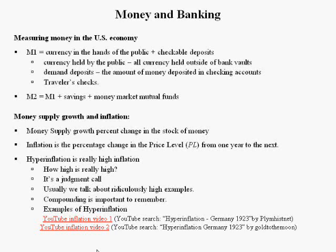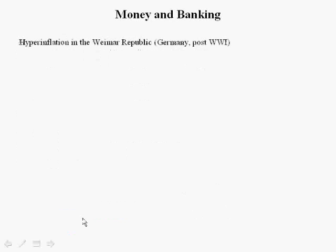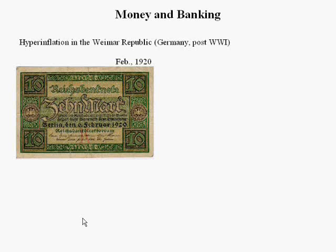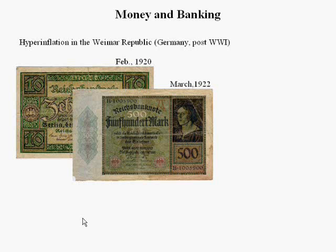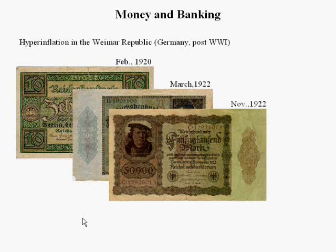These are really well put together YouTube videos that talk about hyperinflation. A famous example of hyperinflation occurred in the Weimar Republic of Germany post-World War I. In February 1920, the Central Bank of Germany was printing 10-mark notes. By 1922, they were printing 500-mark notes, then 50,000-mark notes.